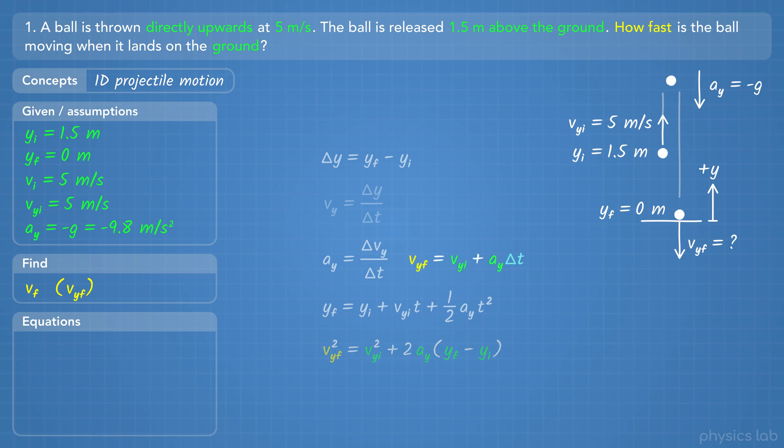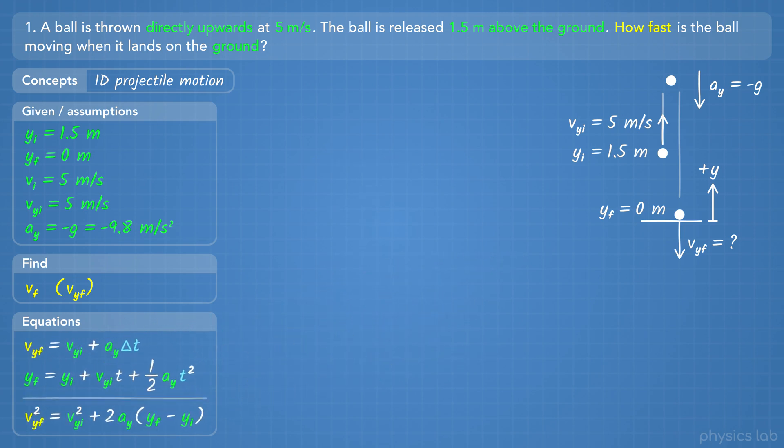We could use the third equation, but we would need to know the time it hits the ground. And we could use the fourth equation to find that time, because we know all the other variables. In some physics problems, there's more than one way to solve it. So let's try both.